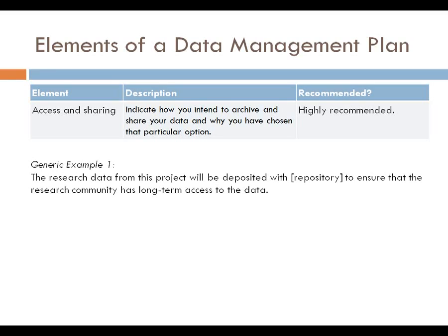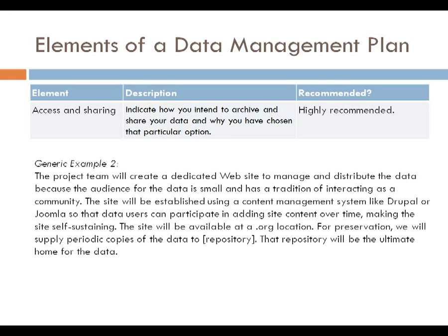The next element, access and sharing, is important to include in a data management plan to specify how the data themselves will be accessed and shared. The importance of this element is shown in recent studies demonstrating that data sharing — specifically through formal avenues like archives and repositories — leads to data being cited more widely, as Gary King has found, but also to more primary and secondary publications resulting from data when shared widely. Another part of this element is the timeliness of when data will be made accessible to others outside of the research team.